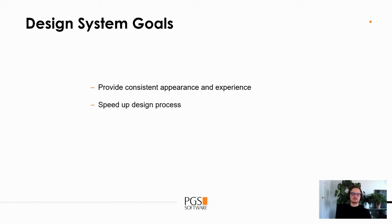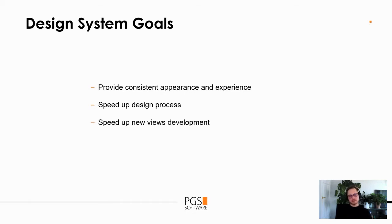Another goal of a design system is to improve the design process. This happens because designers have libraries of components and elements, so each time they're producing a new view they don't have to reinvent any of the controls or components — they just use the same components they already have. This way they can focus on more important things like the overall user experience. Another goal is improvement of shipping views on the development side, because developers have the same libraries as designers, though development libraries, and they are synchronized one-to-one — at least they should be.